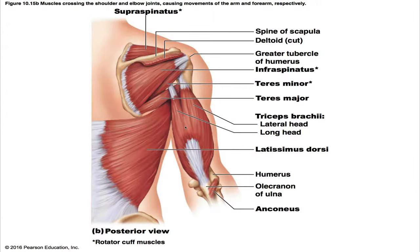The only muscle in the posterior compartment of the arm is the large, fleshy triceps brachii. It has a three-headed origin. The long and lateral heads lie superficial to the medial head. The long head originates from the infraglenoid tubercle of the scapula, the lateral head from the posterior shaft of the humerus, and the medial head from the posterior humeral shaft distal to the radial groove. Its insertion is by a common tendon into the olecranon process of the ulna. Its prime action is powerful forearm extension, and it is an antagonist of the forearm flexors. The long and lateral heads are mainly active in extension against resistance. It is innervated by the radial nerve.